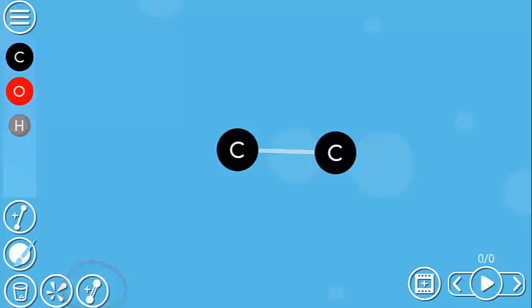Now choose the bond and you get an additional bond tool that can change it to a double or a triple. You can also decrease the number of bonds by using the trash can icon.